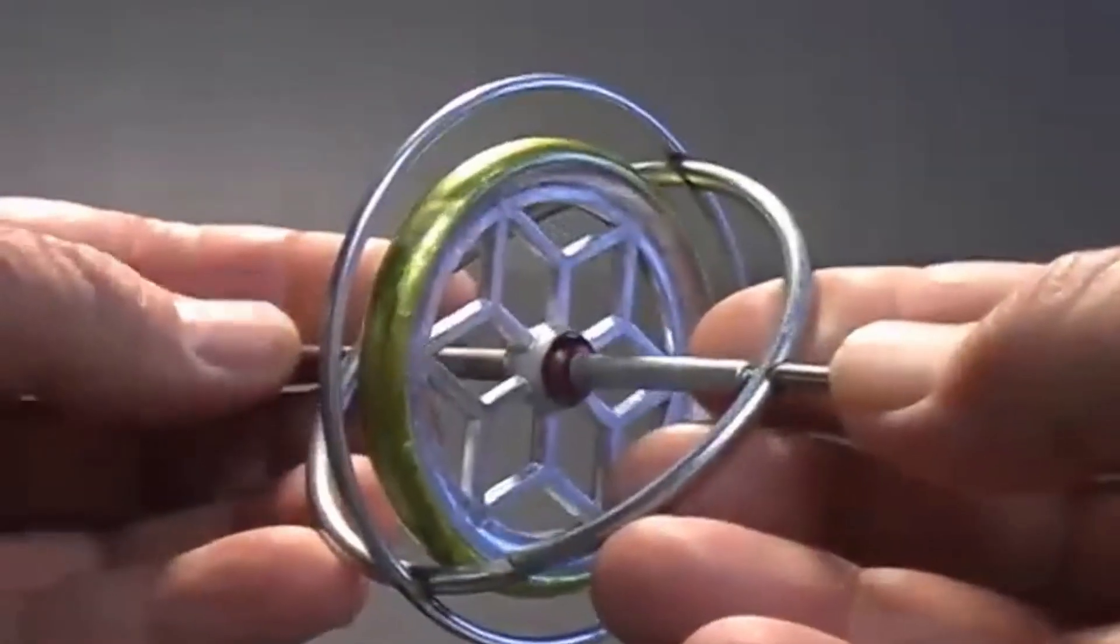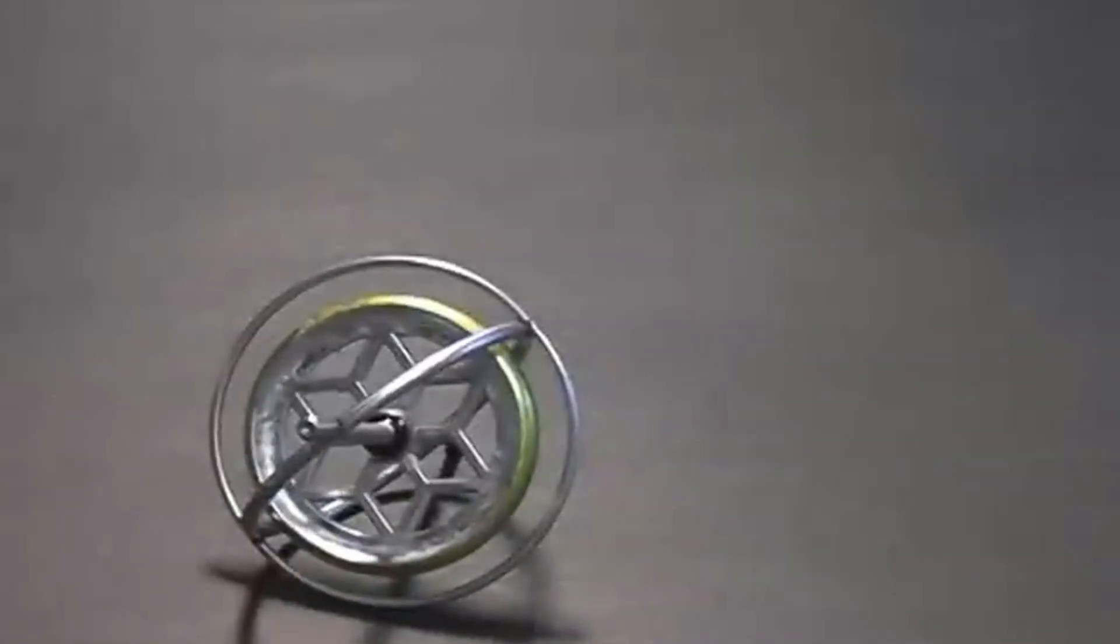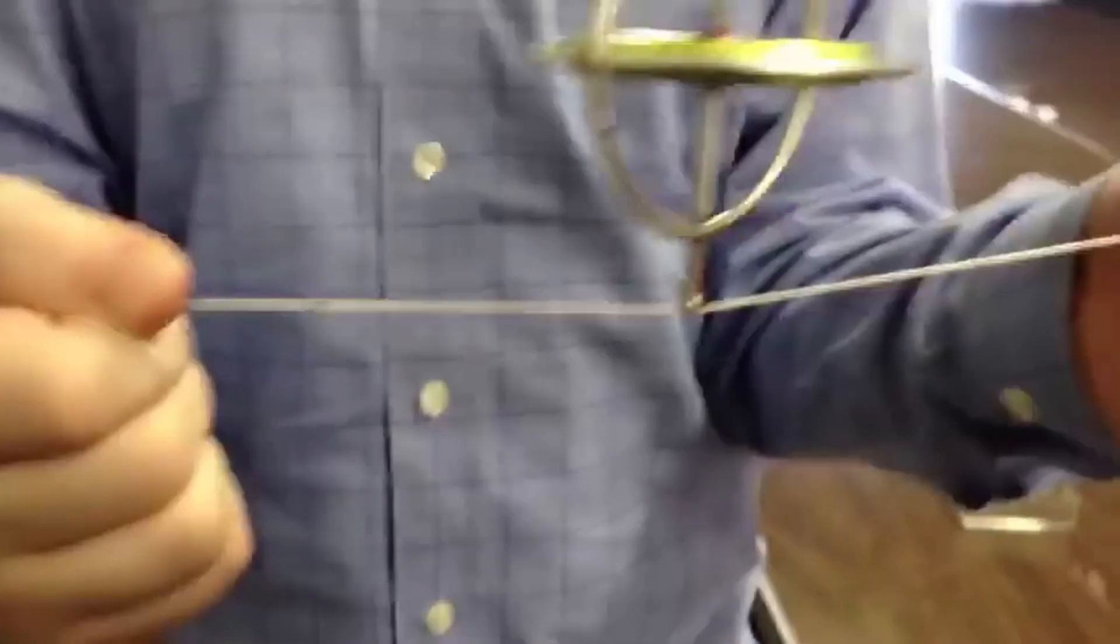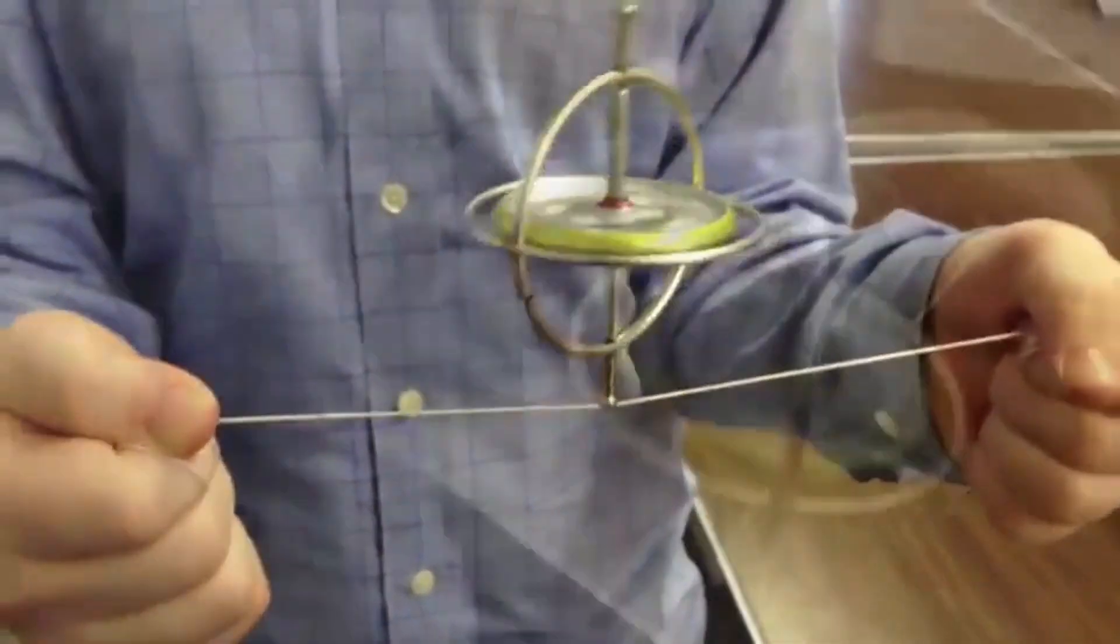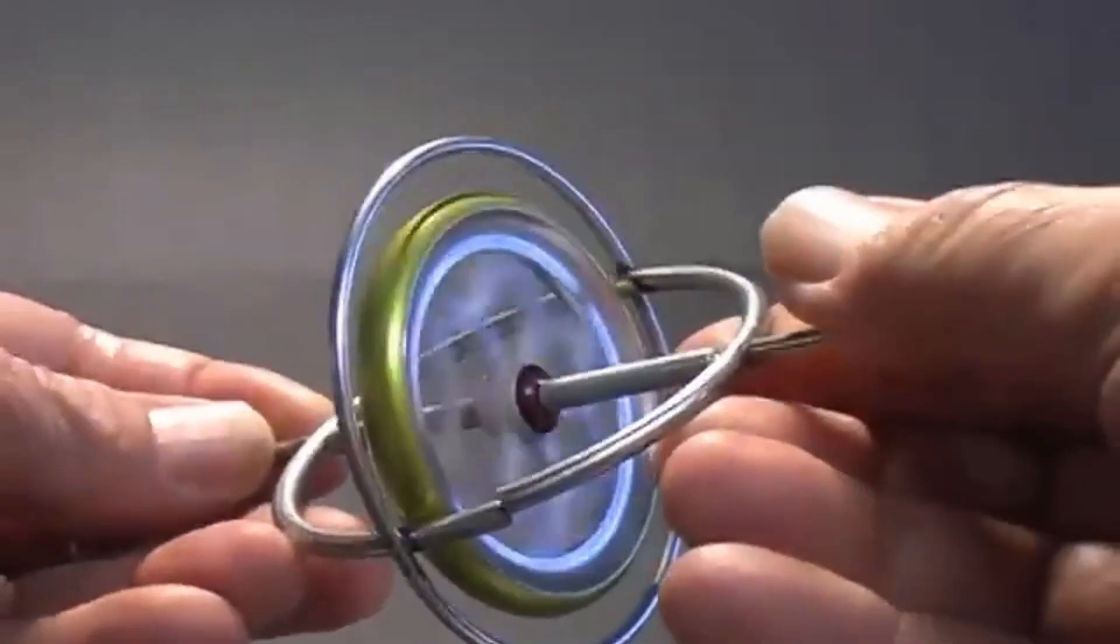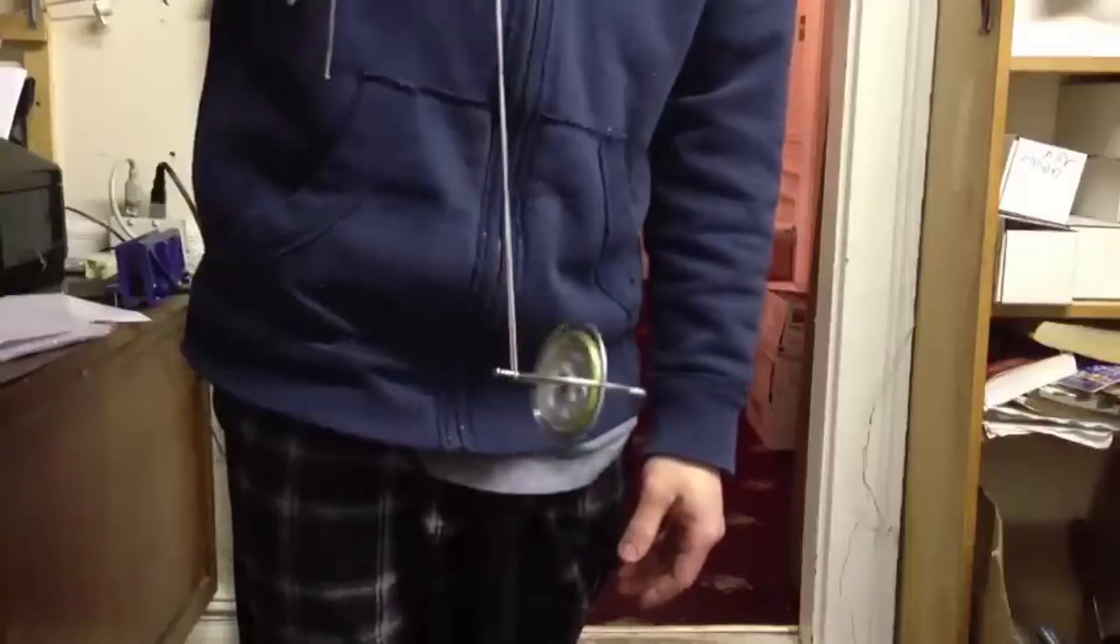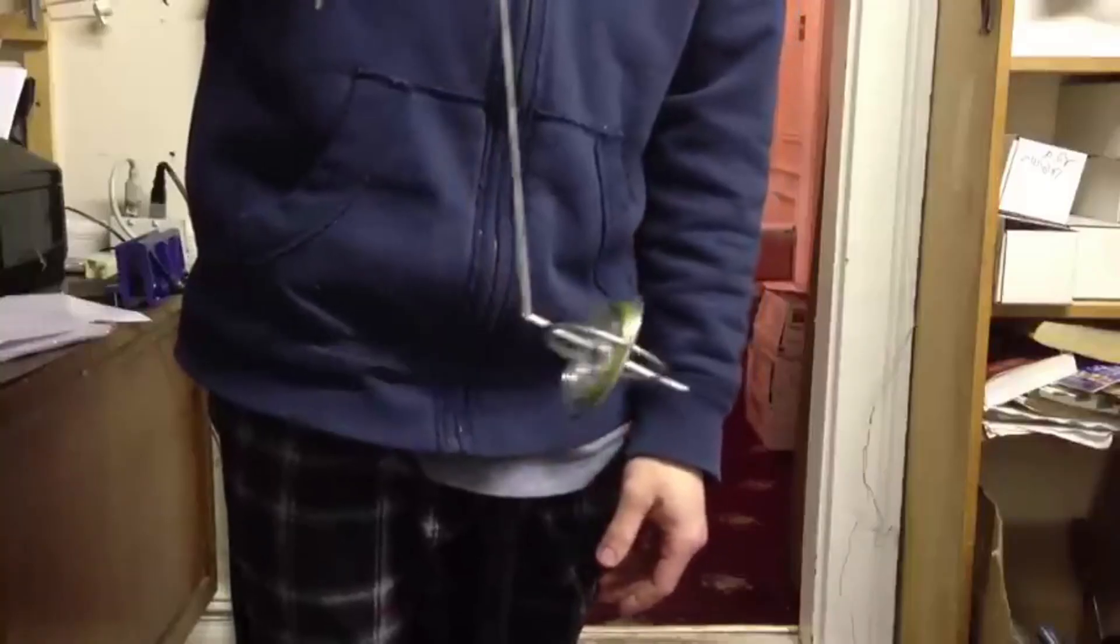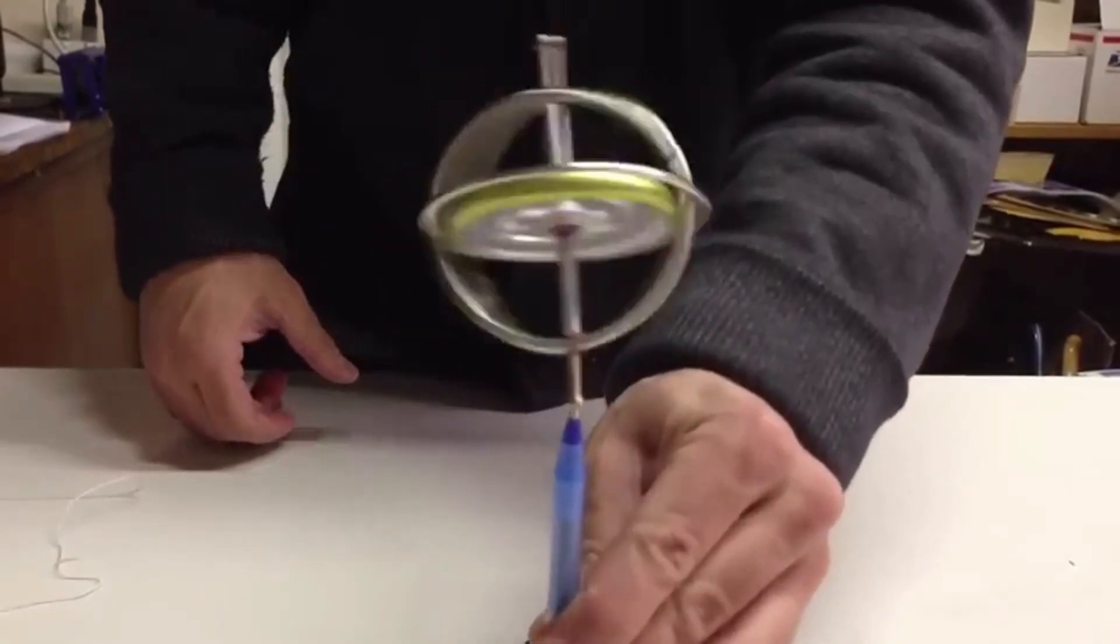When the inner wheel spins at high speed, it gains significant angular momentum. This stability makes it fiercely resistant to changes in its orientation. When gravity tries to pull it down, instead of falling, the gyroscope precesses or rotates sideways around the pivot point. This creates the uncanny illusion that it's defying gravity, turning a fundamental force of physics into a mind-bending balancing act.